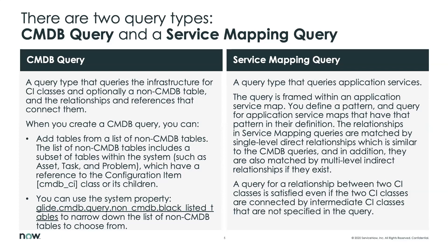The other type is a service mapping query. This query is framed with an application service map — you define the pattern and query for applications that have patterns in their definition. The relationships in service mapping queries are matched by single-level direct relationships, similar to CMDB queries, but also by multilevel and indirect relationships. A query for a relationship between two CI classes can be satisfied with those two CI classes connected by intermediate classes not specified in the query.